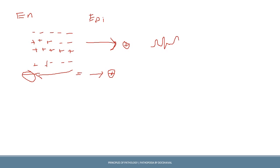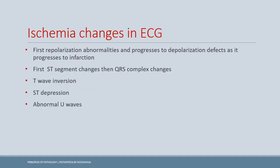A wave of negative charge moving in this direction is the same as a wave of positive charge moving in the opposite direction, which is why we get an upright T wave. The T wave is formed during the repolarization phase. So now we can understand the ECG findings in ischemia — repolarization abnormalities are seen in ischemia and depolarization changes in infarction — because the Na+/K+ pump fails and cells cannot repolarize.